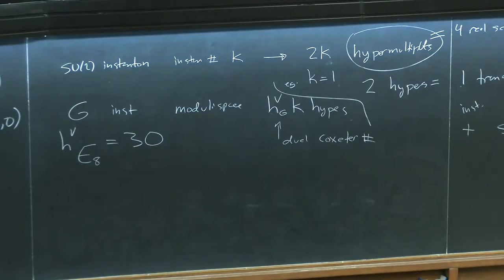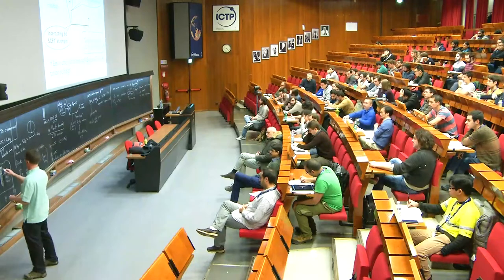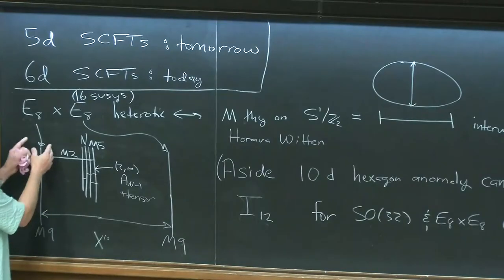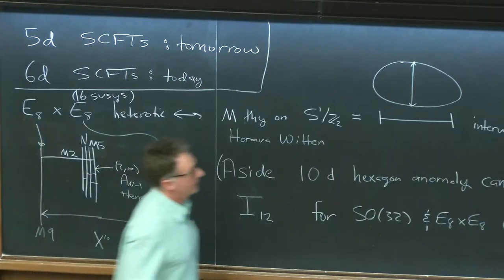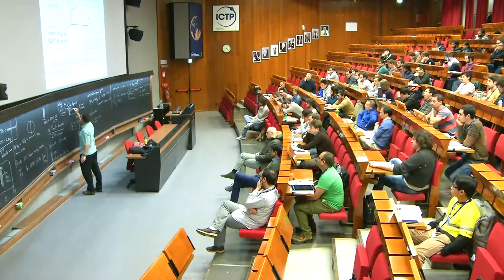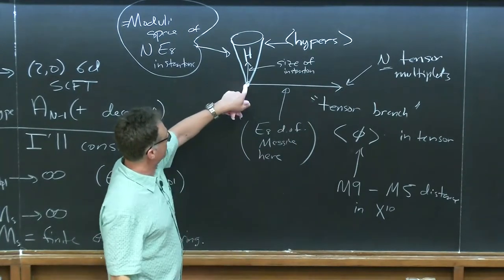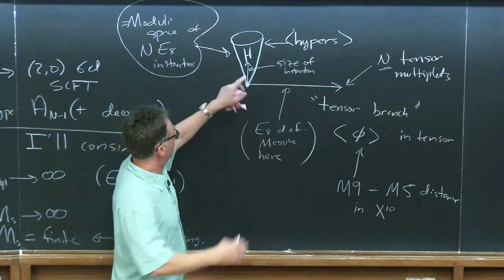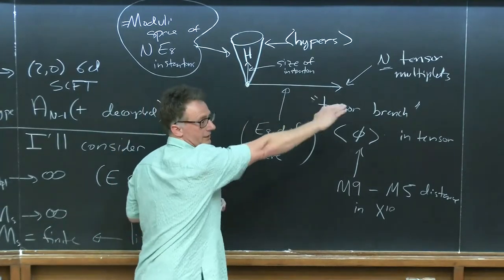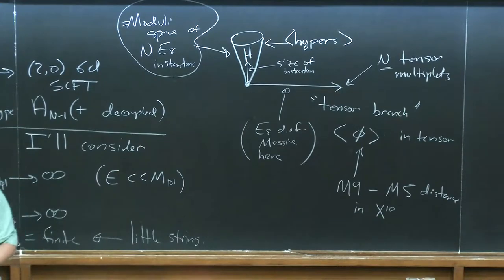This theory at the origin has a Higgs branch that is the moduli space of E8 instantons. This is because the M5 brane is exactly what you get when you shrink the instanton to zero size. Moving up on the tensor branch corresponds to giving the instanton a finite size. When the instanton is nonzero size it's stuck on the M9 brane, but when it becomes zero size it can move off in the extra direction — that's the tensor branch.